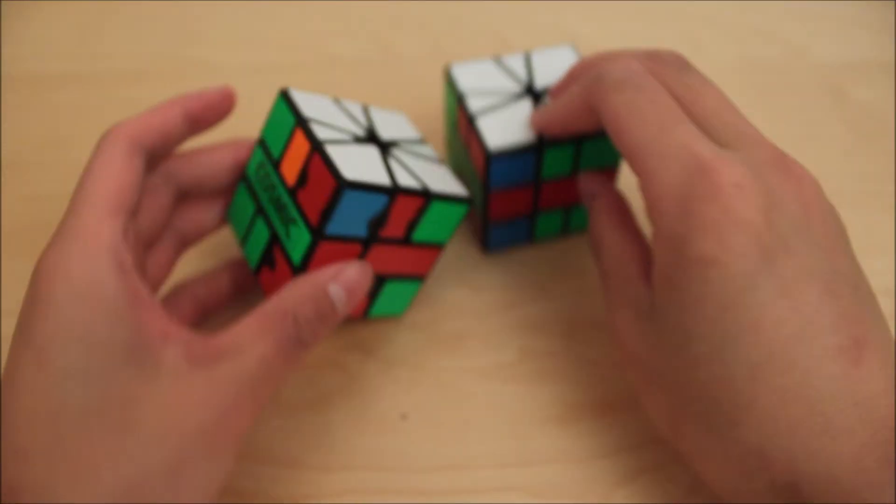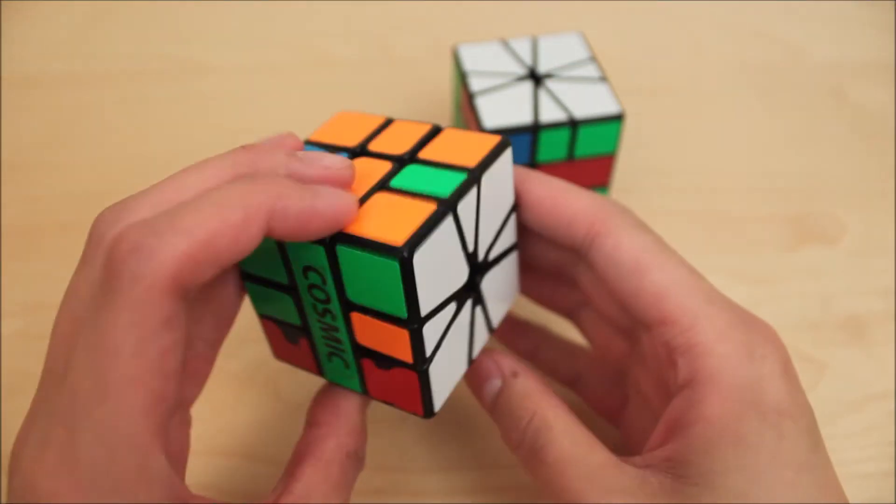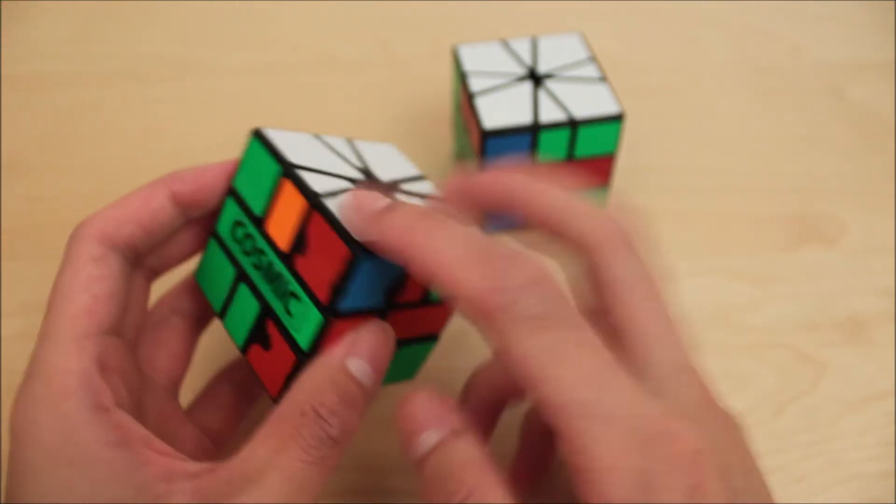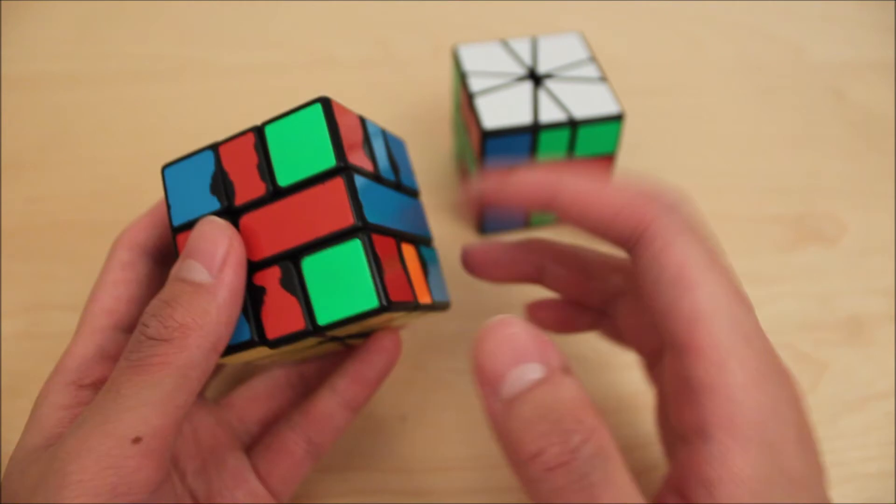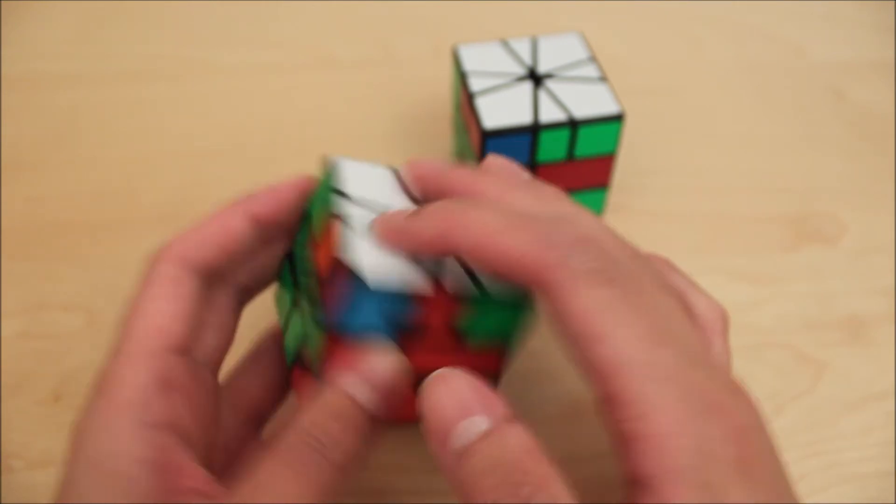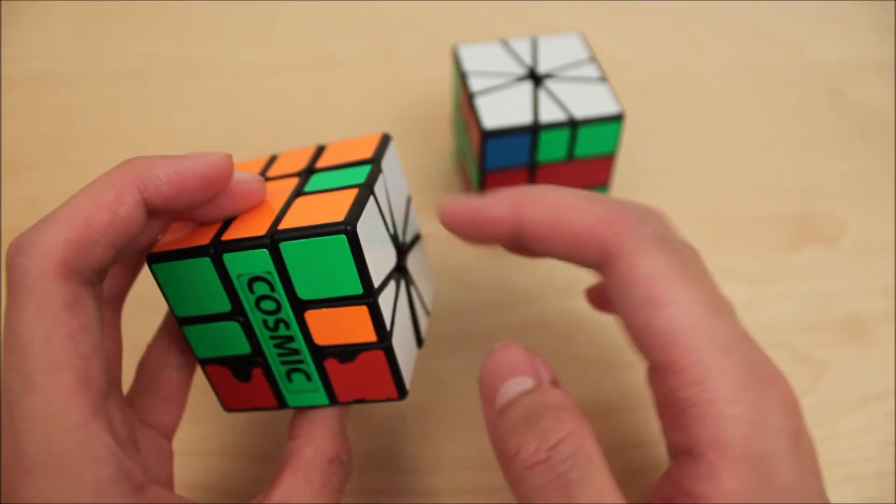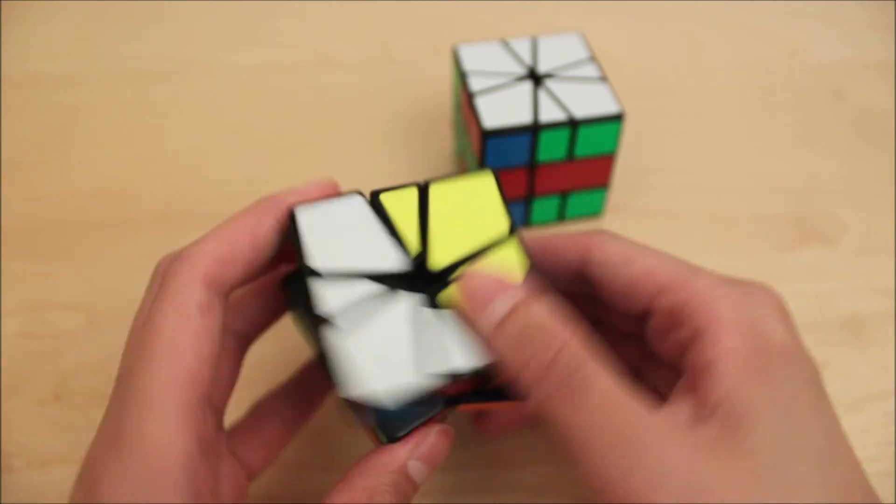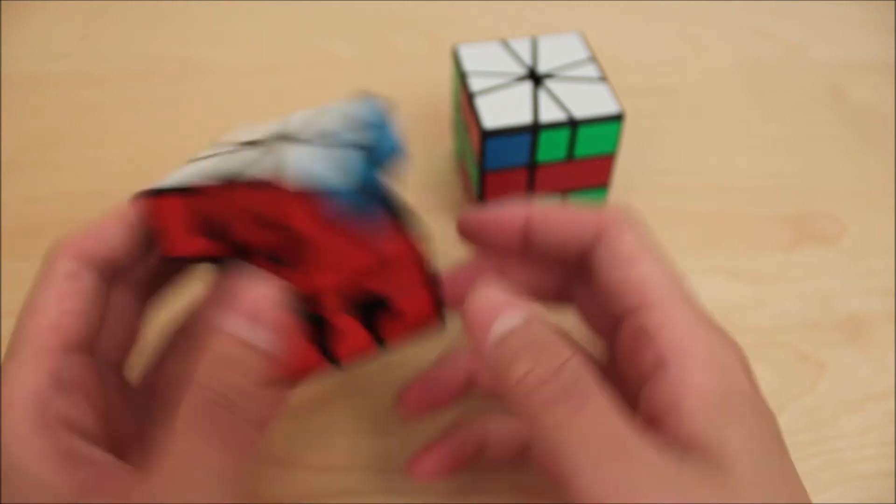So continuing with the PJPJ applications, we have R-perms. So for R-perms, it doesn't matter what order, of course, you do the PJPJ and the adjacent-adjacent. And it doesn't matter what R-perm you get, either one's fine. So PJPJ, adjacent-adjacent.